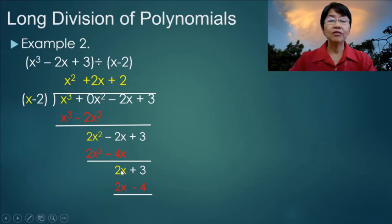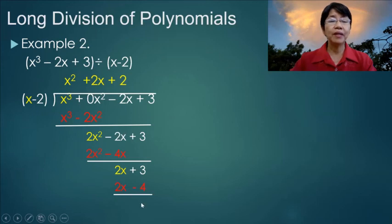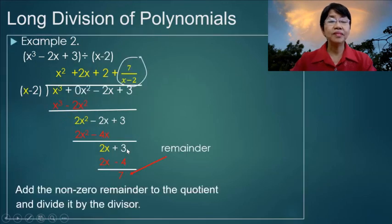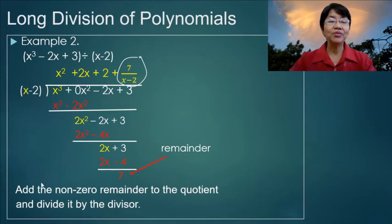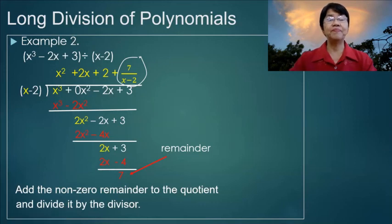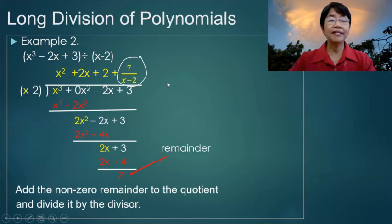Continue the division: 2x divided by x equals 2. Then 2 times x equals 2x, and 2 times negative 2 is negative 4. Subtracting gives 3, which becomes positive, so 3 plus 4 equals 7. And 7 is the remainder. You have to add the non-zero remainder to the quotient divided by the divisor: 7 over x minus 2. This is our final answer.